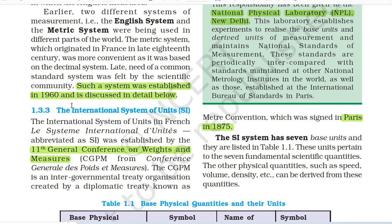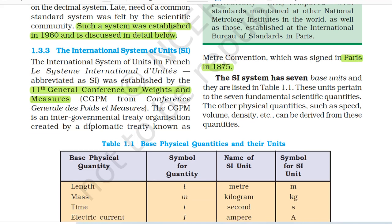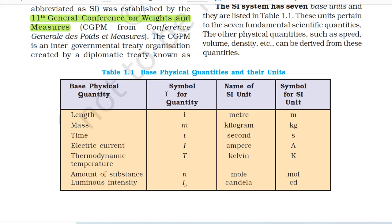Such a system was established in 1960. 1.3.3 The International System of Units. The International System of Units was established by the 11th General Conference on Weights and Measures (CGPM — Conférence Générale des Poids et Mesures). The CGPM is an intergovernmental treaty organization created by a diplomatic treaty known as Meter Convention which was signed in Paris in 1875. The SI system has 7 base units listed in Table 1.1. These units pertain to 7 fundamental scientific quantities. The base physical quantities are: length, mass, time, electric current, thermodynamic temperature, amount of substance and luminous intensity.